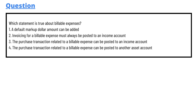We have some options here. Option A: a default markup dollar amount can be added to invoicing. Option B: a billable expense must always be posted to an income account. Option C: the purchase transaction related to a billable expense can be posted to an asset account.